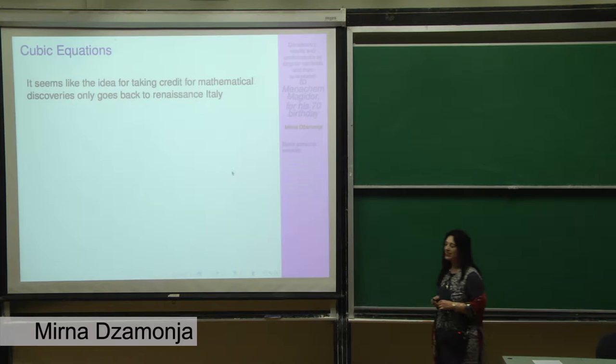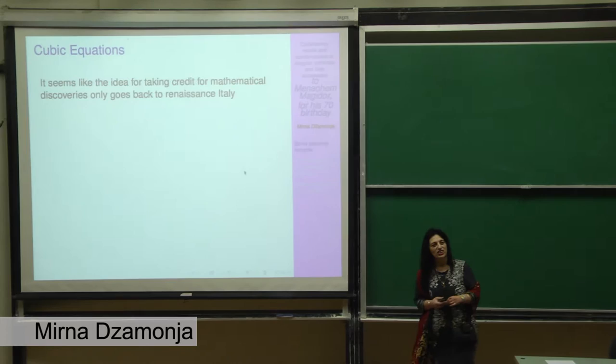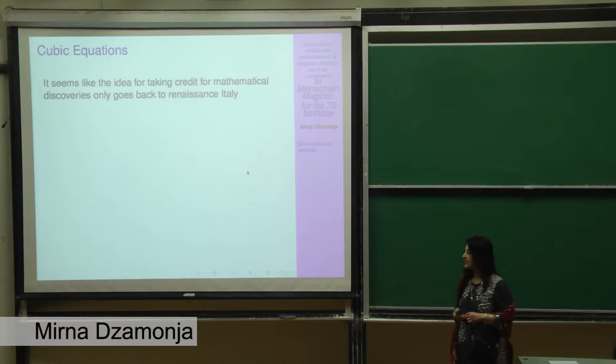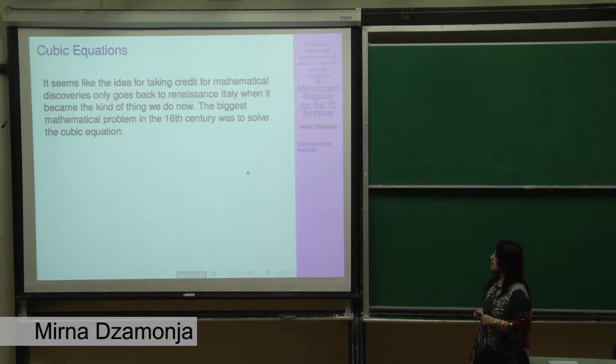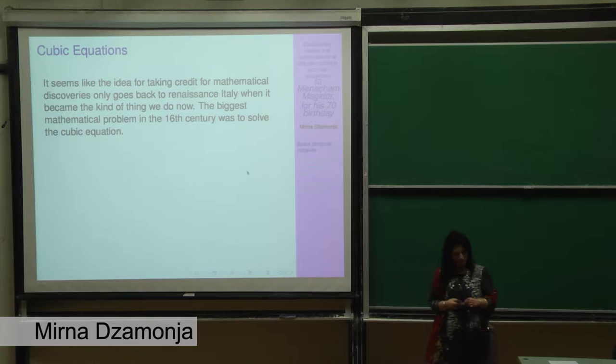It seems like the idea of giving credit to people for their theorems is quite recent and comes from Renaissance Italy. Before that, people just did mathematics. But then at that time, they started giving credit for theorems, and that's basically the way that we do it now, perhaps in a little bit wilder way. So let me tell you how that was in the case of the cubic equation. Maybe some of you know this story.